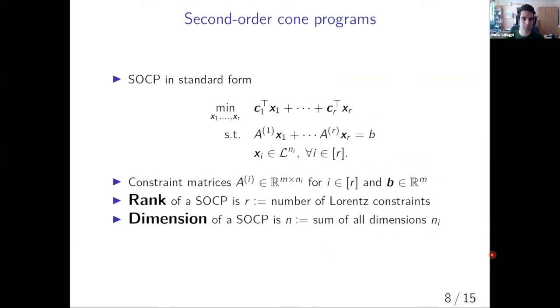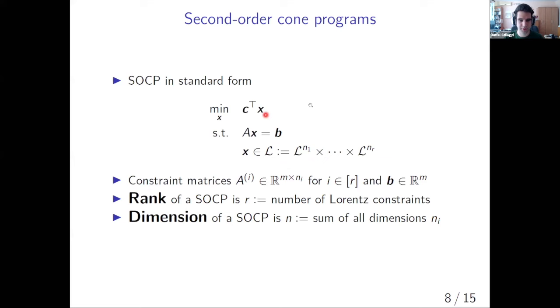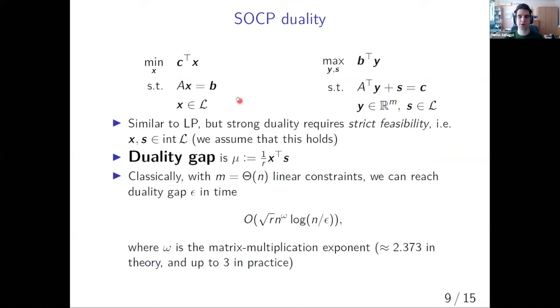In general, the conic constraints in second order conic programs actually apply to blocks of our vectors. So we actually constrain the blocks of our variable X to be in these cones of various dimensions. Here you see how it looks like when we write all of the blocks explicitly. Each of these x's is actually a block of our big block vector X. We see that we still have a linear objective, some linear constraints, and these conic constraints applied to the blocks. There are maybe two important quantities: the rank of the SOCP, which is the number of these cones, and the dimension, which is the sum of the dimensions of the blocks.